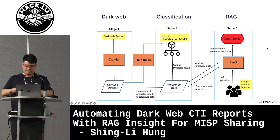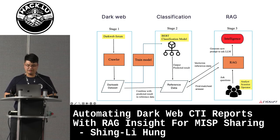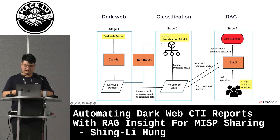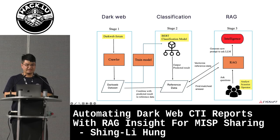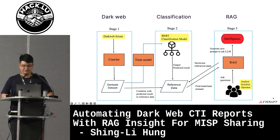We prepare reference data for the large language model by combining our dataset and predicted results into a new reference dataset. Finally, when security analysts want to know what's happening on the dark web, they can ask questions. We use the RAG method to vectorize questions and reference data, compare similarity, find the matching answer in the reference data, generate a new prompt to ask the LLM, and get the dark web intelligence.